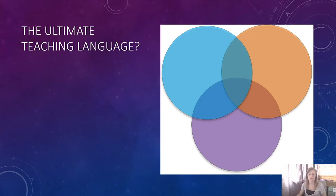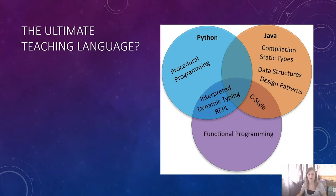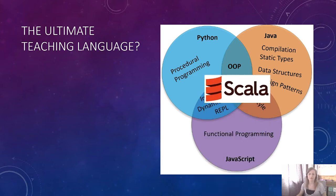Is Scala the ultimate teaching language? Well, if we look at Python, it's a procedural programming language with a REPL. On the other side, we've got Java with compilation, static types, data structures, design patterns, C-style, and functional programming. JavaScript sits across Java and Python with object-orientation. But if you want to combine all of these together, Scala does this nicely — it's a good place to start if you want to begin learning functional programming.